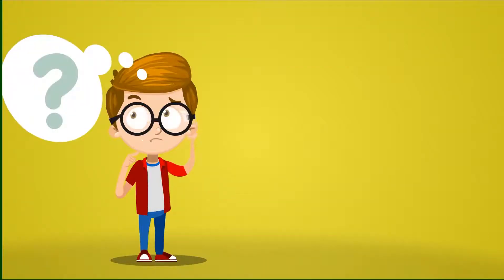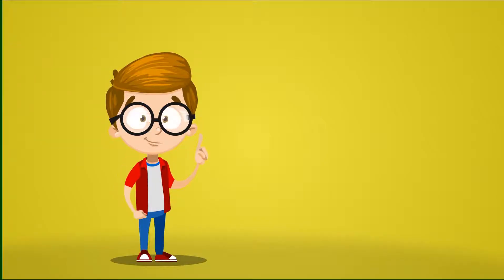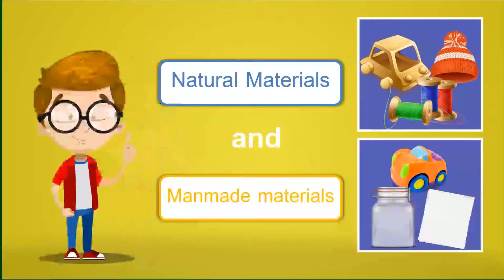Faddis is thinking about classifying these materials into two groups. What do you think those groups are? Let us see how he classified them. Faddis classified the materials into two groups: natural materials and man-made materials.